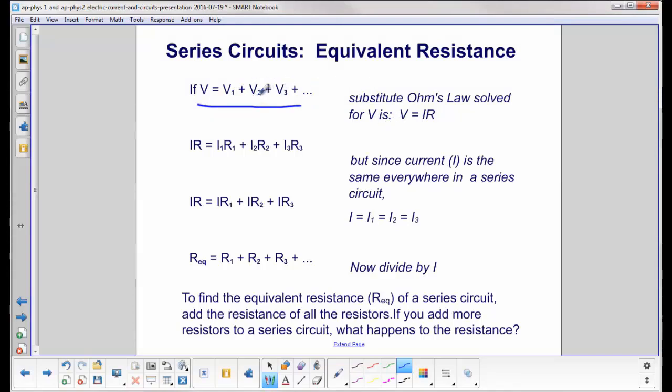We now substitute in Ohm's law, V equals IR. So V out of the battery is the current of the battery times this R over here. This is going to be the resistance of the circuit. And actually, soon we're going to find that's the equivalent resistance.